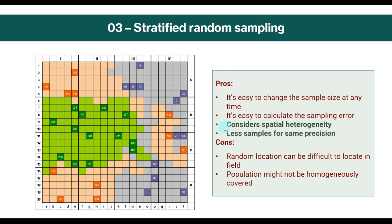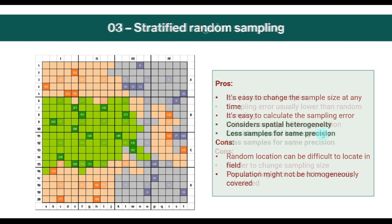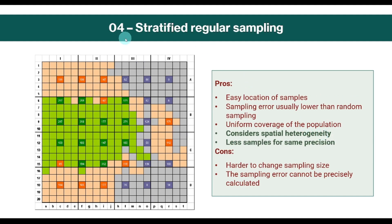The additional pros of stratified random sampling are that we consider the spatial heterogeneity, and we need fewer samples for the same precision. In the same sense, we also have stratified regular sampling, where instead of random sampling we apply regular sampling within each stratum. The pros and cons are the same as in regular sampling, plus the pros of stratified sampling.